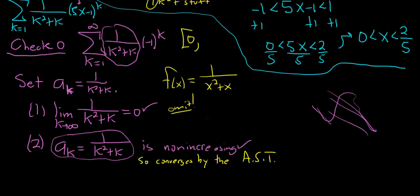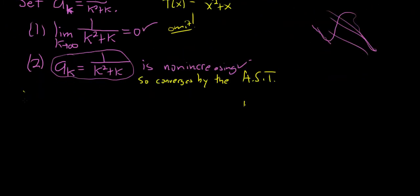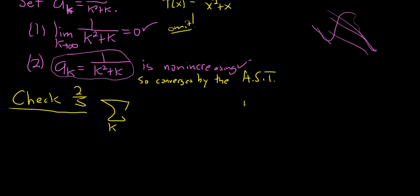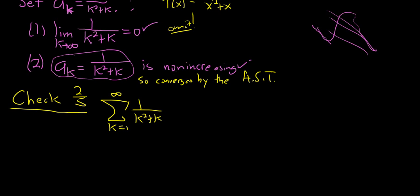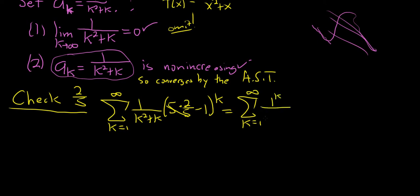Let's check x equals 2/5. Plugging 2/5 into the original series gives: the infinite sum from k equals 1 to infinity of 1 over k squared plus k, times 5 times 2/5 minus 1 to the k. Five times 2/5 gives 2, so we get 2 minus 1 to the k, which is just 1 to the k. So this becomes the infinite sum as k goes from 1 to infinity of 1 over k squared plus k. Now we have to determine if this converges or diverges.